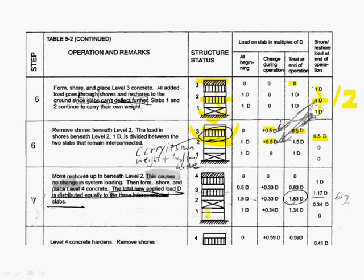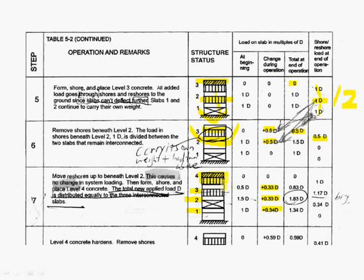Then we take reshoring from the first floor and snug it into the second floor — nothing is going to change. But what changes is that we put on the fourth floor of slab. Now slab 1, 2, 3 are going to deflect. So all the increased load is going to be distributed evenly among them. The increased load, which is 1D, is going to be transmitted first through the fourth floor of shoring — so the load is going to be 1D — to the third floor of slab.